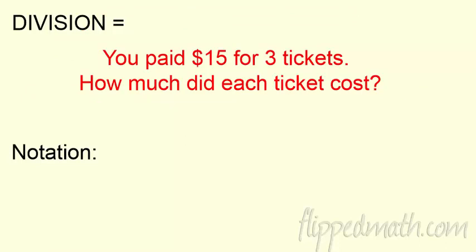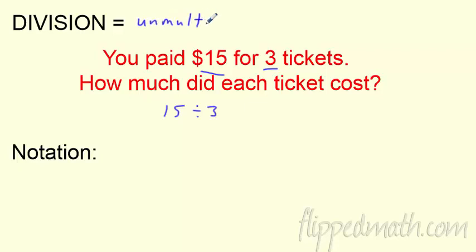That is it for multiplication. What about division? Think about this word problem — it's almost exactly the same. If you paid $15 for 3 tickets, how much did each ticket cost? I take my $15 and divide it into those 3 tickets. Division is really just unmultiplying — 15 divided by 3 is 5, because 3 times 5 is 15. We're just undoing multiplication, or you could think of it as repeated subtraction.